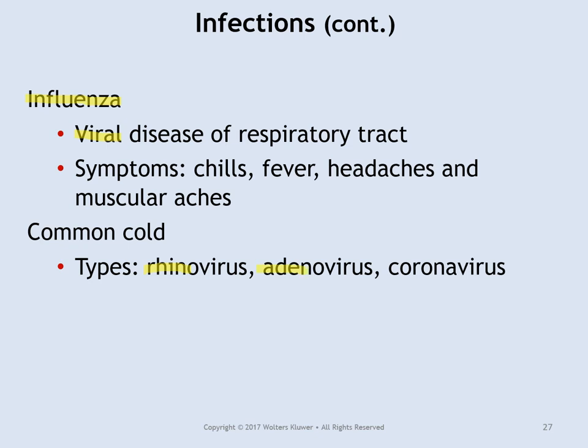Influenza or the common flu, like H1N1, is generally viral. The common cold can be caused by viruses such as rhinovirus, adenovirus, and coronavirus. The current highly mutated form appears to have originated from wet markets in China, starting in bats, mutating and spreading through pangolins before moving into the human population.